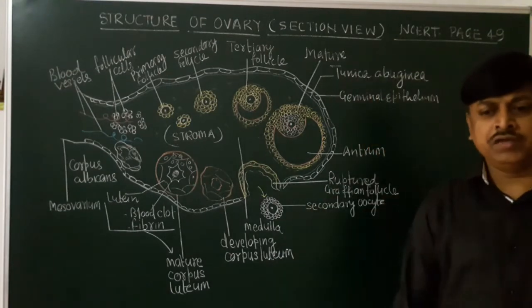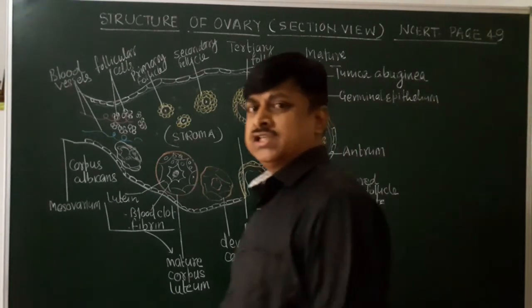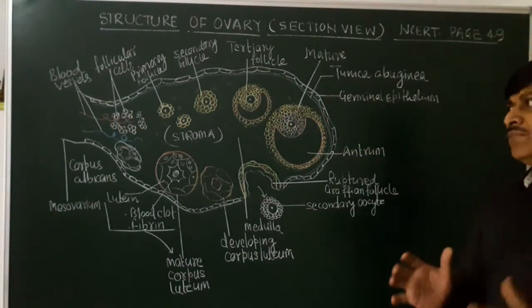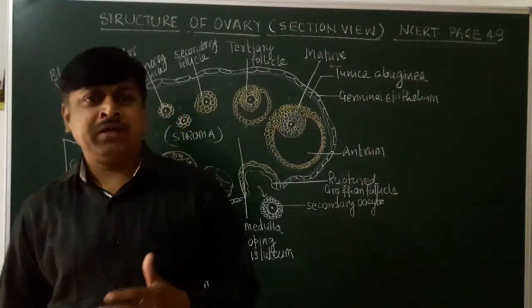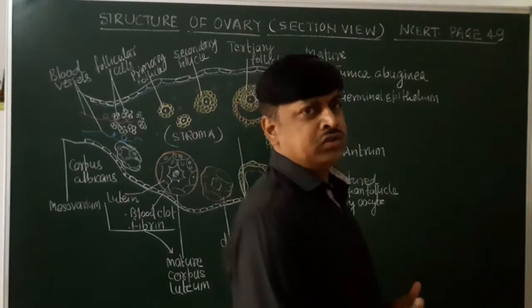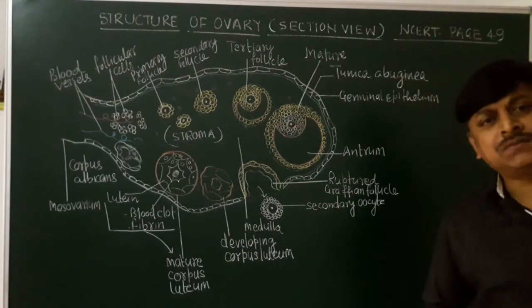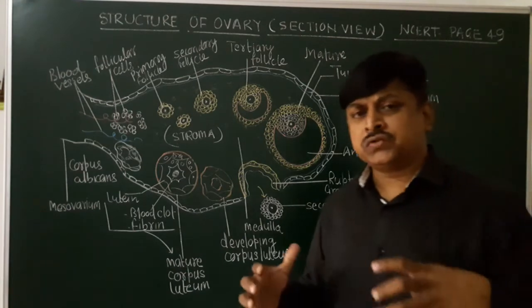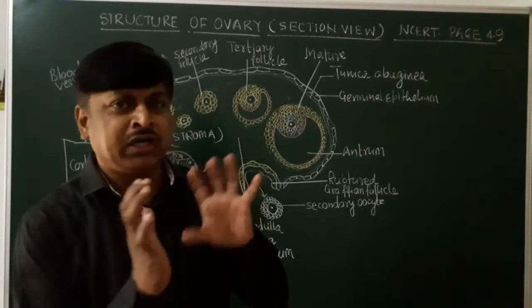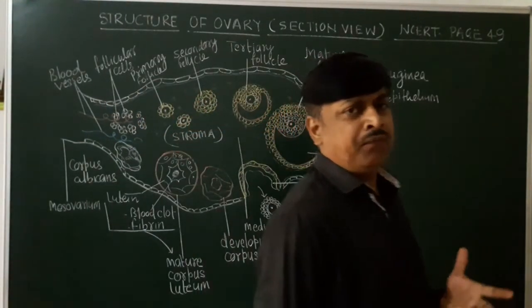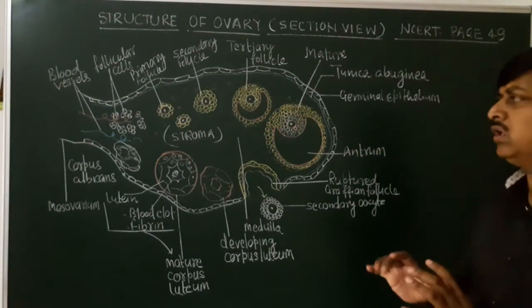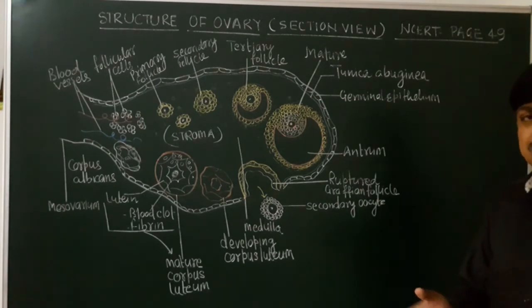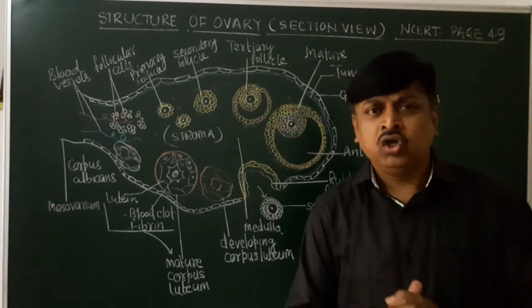Hello everyone, good evening my dear students. Once again your Chandraka is here in front of you with another topic from the chapter Human Reproduction. In my previous videos I have explained the male reproductive system as well as spermatogenesis. I have also explained the female reproductive system. Today's topic is purely based on the internal structure of the ovary — what structures are found inside the ovary. Through a separate video I will explain the process of oogenesis.